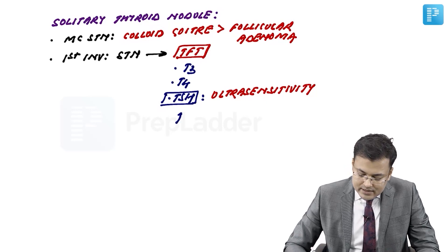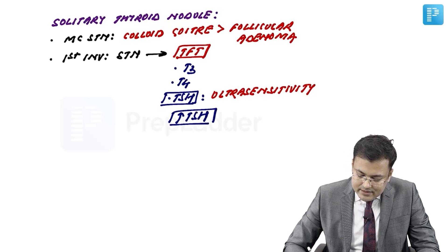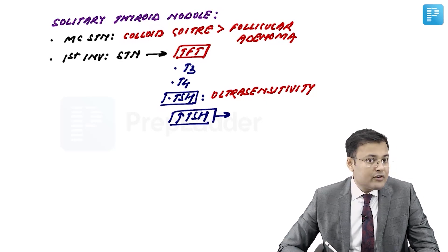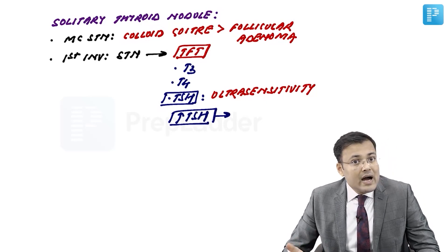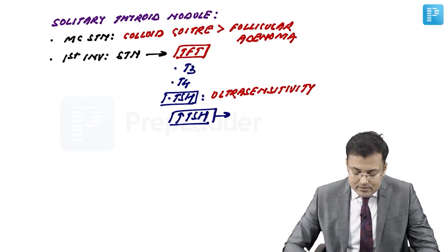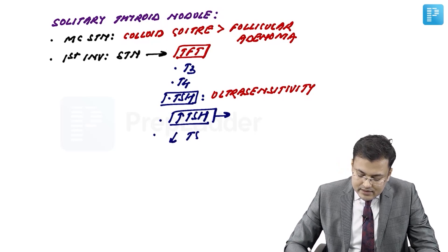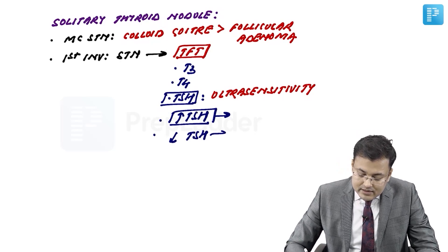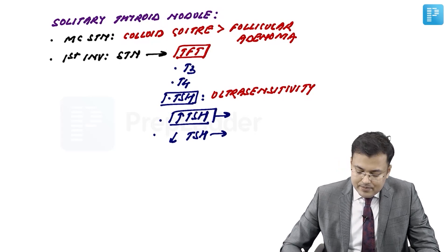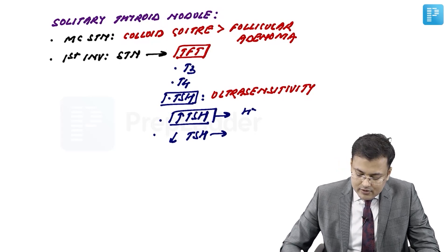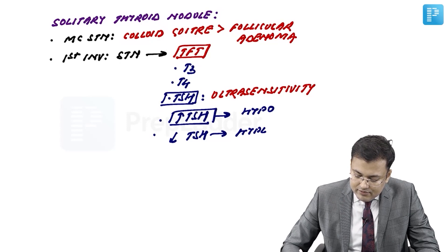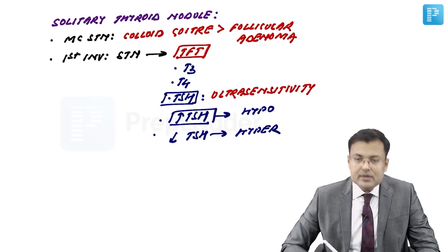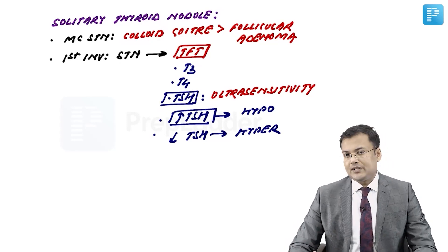If TSH starts rising, it is suggestive of subclinical hypothyroidism. If TSH starts decreasing, it is suggestive of hyperthyroidism. TSH is the first investigation to order.